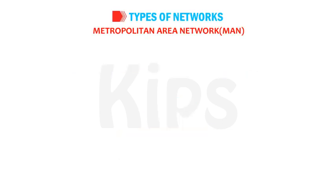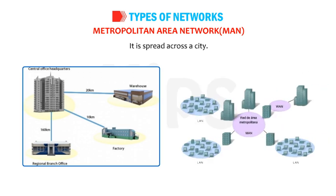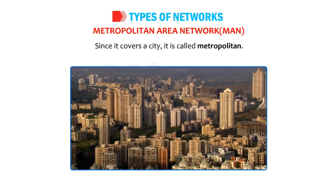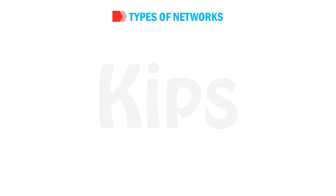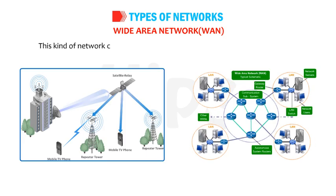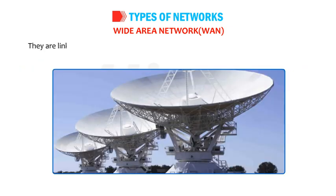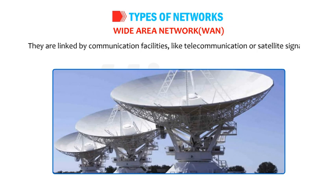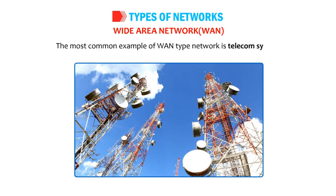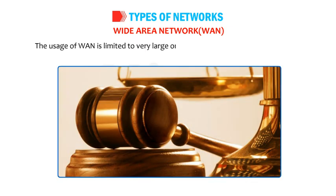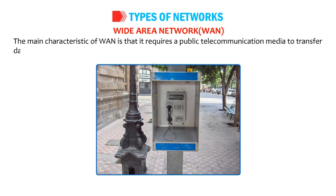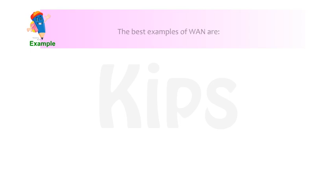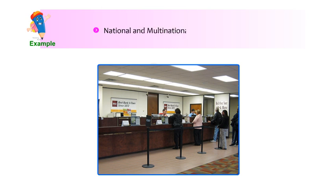Metropolitan area network (MAN) is a larger network than LAN, spread across a city. The most common examples of MAN-type networks are cable television and branches of a local bank in a city. Wide area network (WAN) connects two or more computers located at distant places, linked by communication facilities like telecommunication or satellite signals. The most common example of a WAN-type network is the telecom system. WAN usage is limited to large organizations and government agencies; it requires public telecommunication media to transfer data. The best examples of WAN are the Internet and Intranet in large multinational companies, ATM facilities, and national and multinational bank customer services.